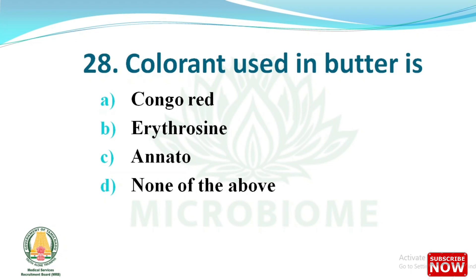Next question: the colouring used in butter is which of the following? The options are Congo red, erythrosin, annatto, none of the above. The right answer is option C, annatto. Annatto is an orange-red food colouring obtained from the seeds of Bixa orellana, which grows in tropical regions of South and Central America.